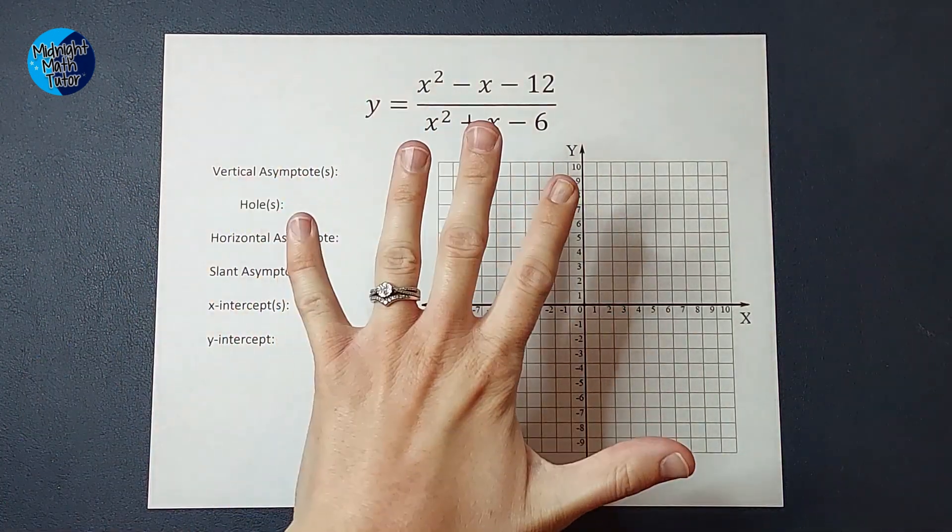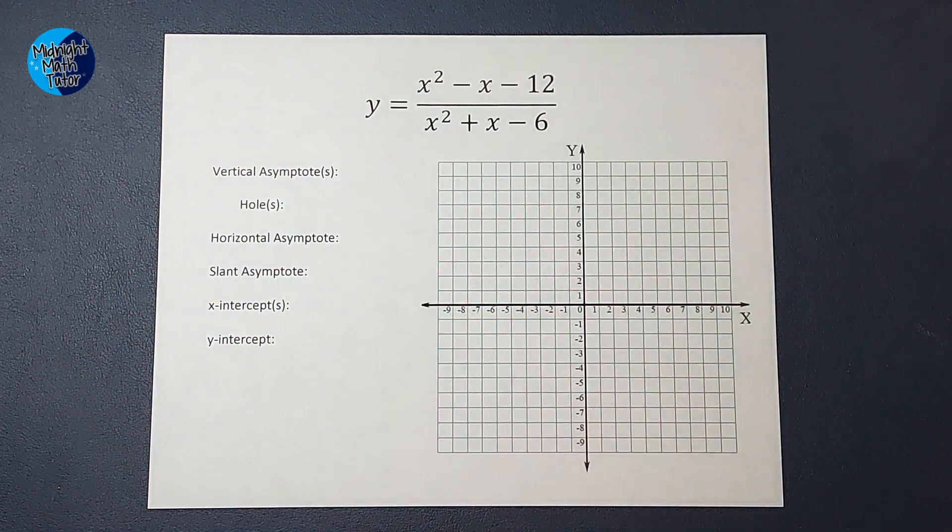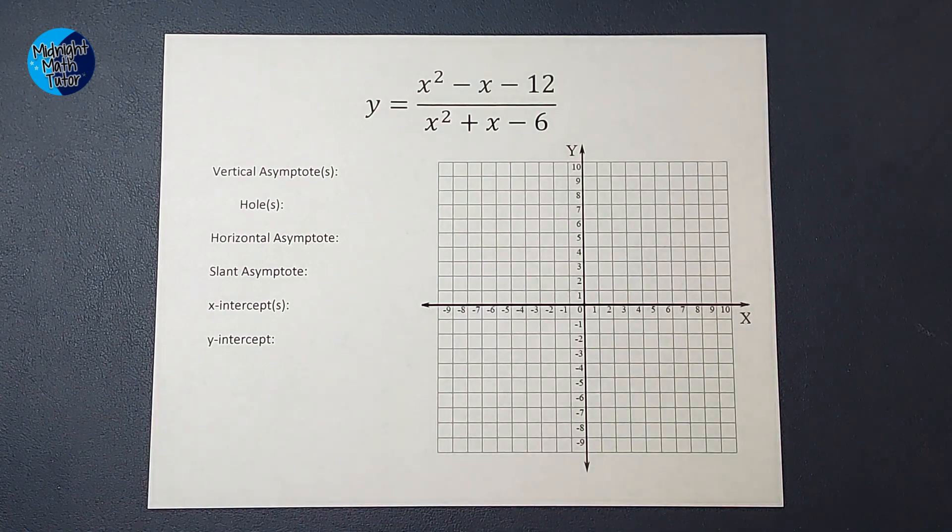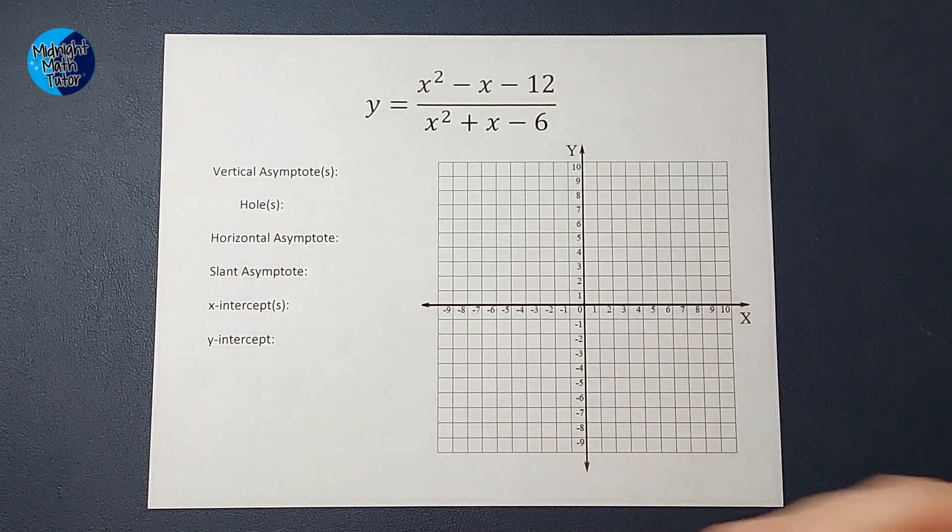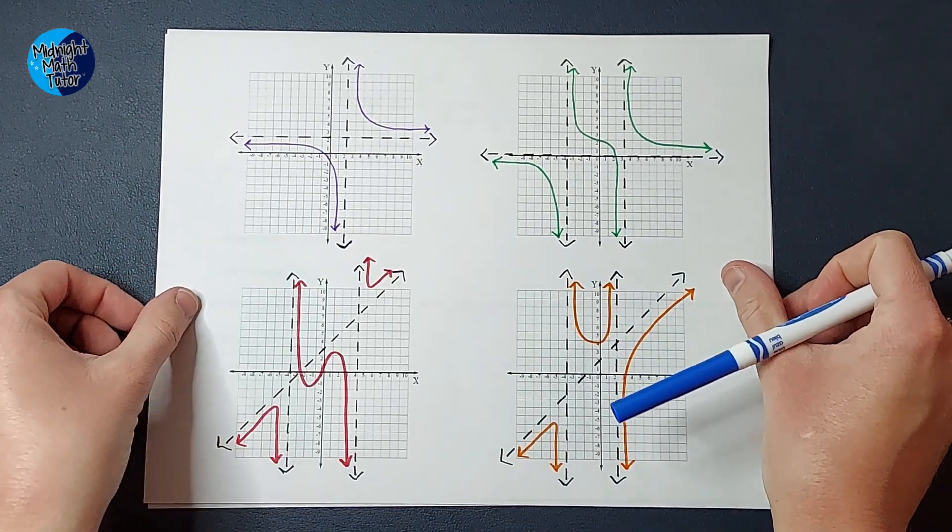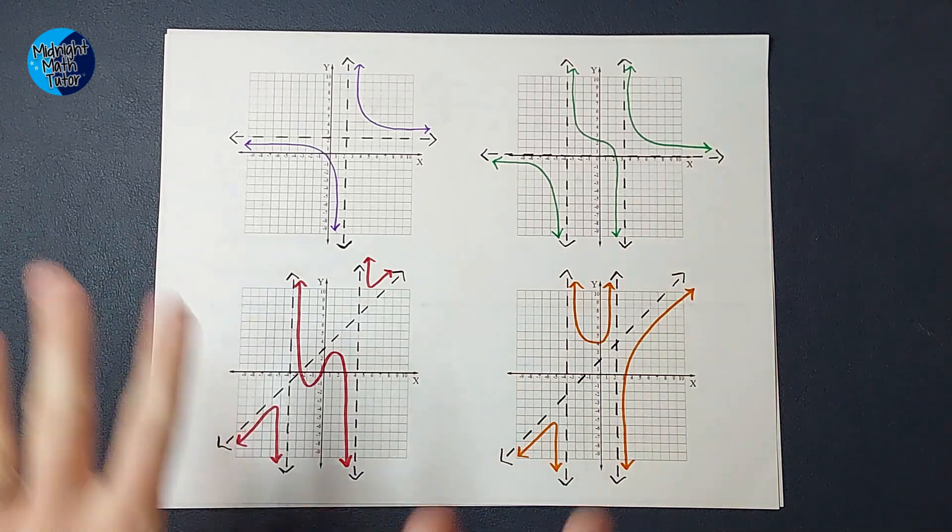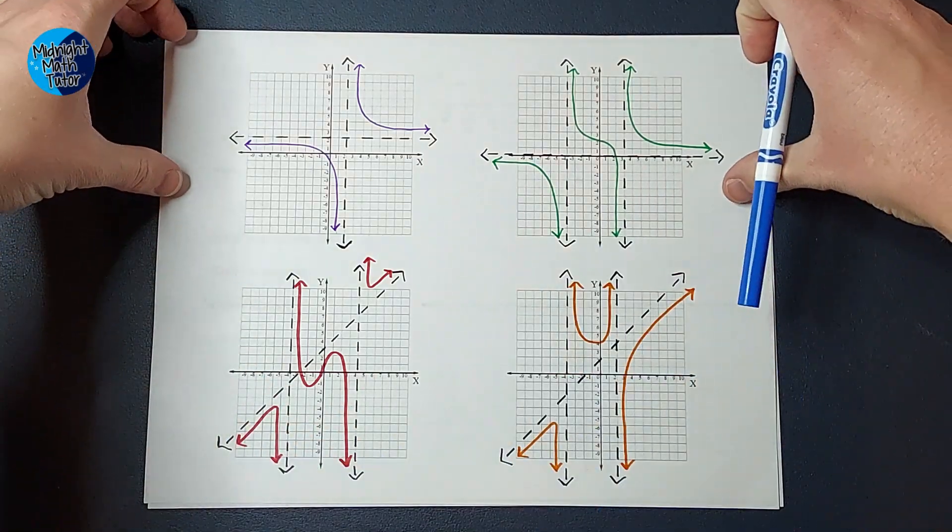Hey guys, we are going to graph a rational function. In this example, the graph has a hole in it. So first of all, I want to show you what these graphs can look like when you're graphing rational functions. This is just a few examples. Obviously there's more, but just to kind of give you an idea of what you're looking at.